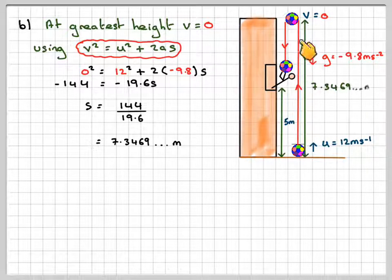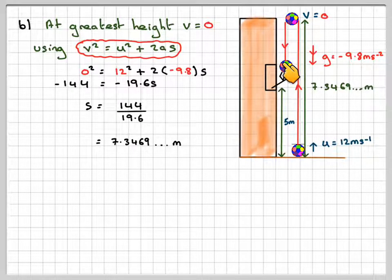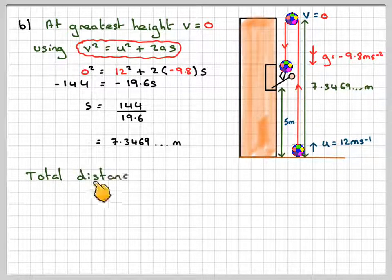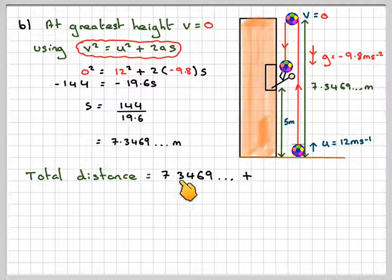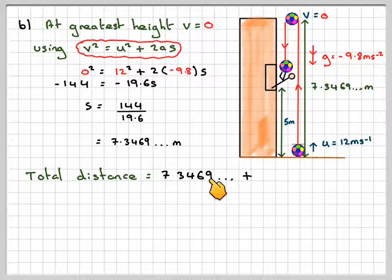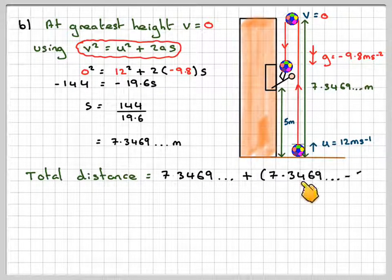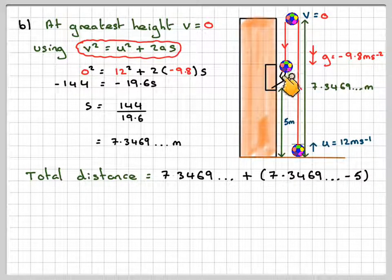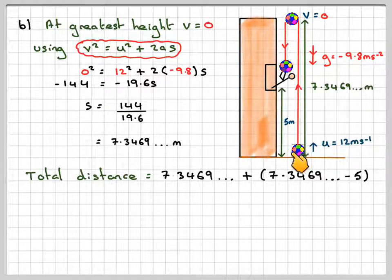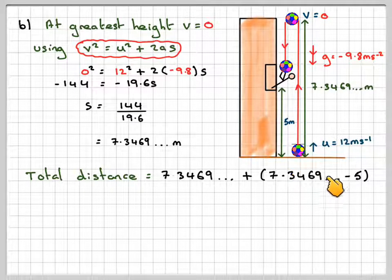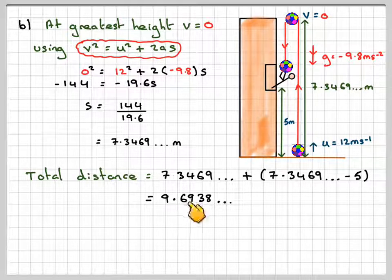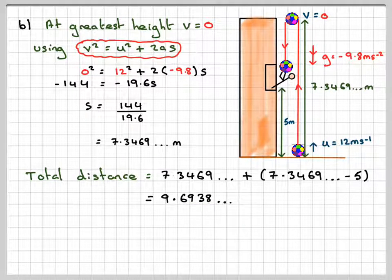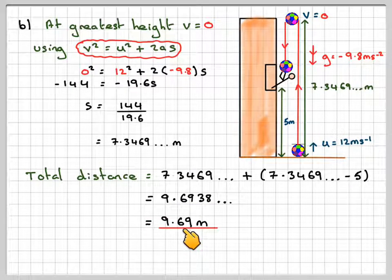So that distance there. But we want this bit as well when it goes back down because we want the total distance travelled by the ball. So the total distance will be equal to 7.3469 plus that number again take away 5. So what I've done is I've got the greatest height, take away 5, and that will give me 9.6938, which to three significant figures is 9.69 metres.